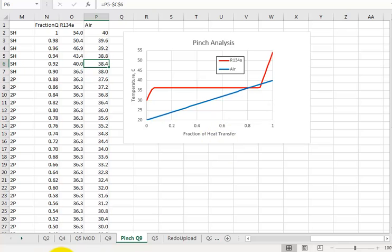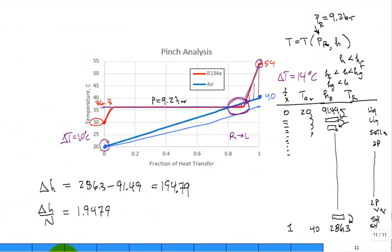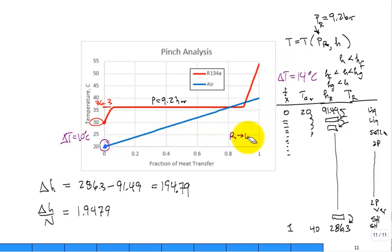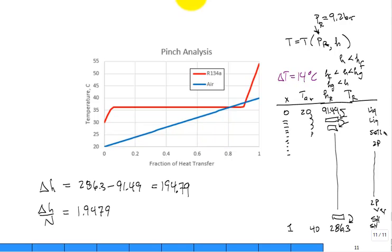This is a combination of heat transfer and thermodynamics — put them together and you can look at the temperature profiles within the heat exchanger, especially when one of the substances is undergoing a phase change. In this case, refrigerant 134A is condensing. Hopefully you found that interesting. Thank you very much.